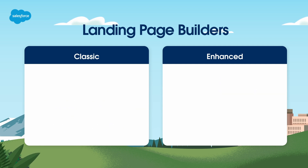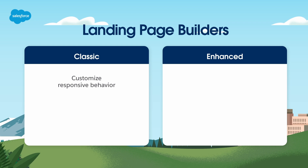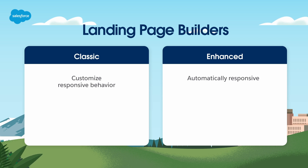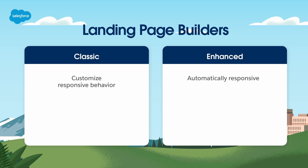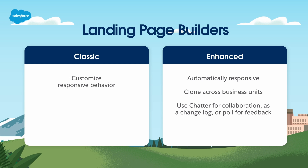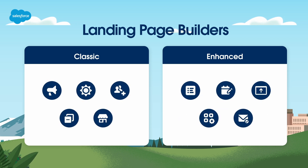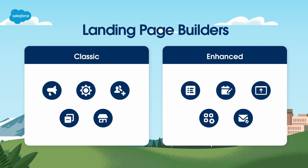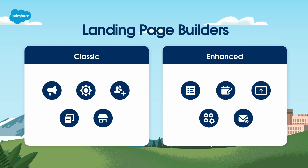Landing pages built with the classic builder allow responsive behavior customization, while those created with the enhanced builder are automatically responsive, allowing you to publish, unpublish, and make changes to live pages. Enhanced builder landing pages can also be cloned across business units, and you can use Chatter to collaborate and log changes. It's worth noting that you aren't restricted to using a single builder — you can use different builders for different scenarios. However, once a page is created, you must stick to the same builder for editing. Switching between builders is not supported.